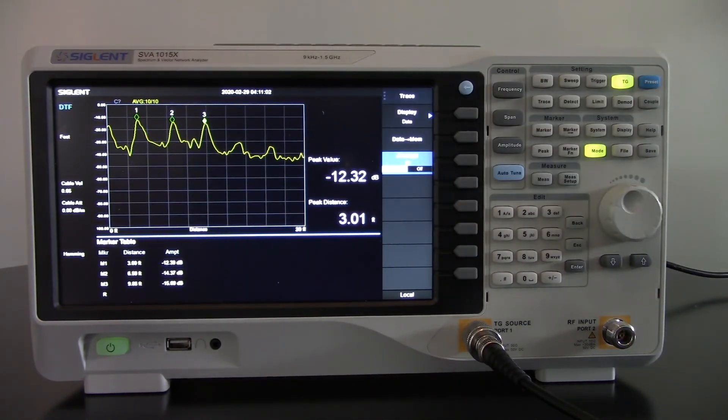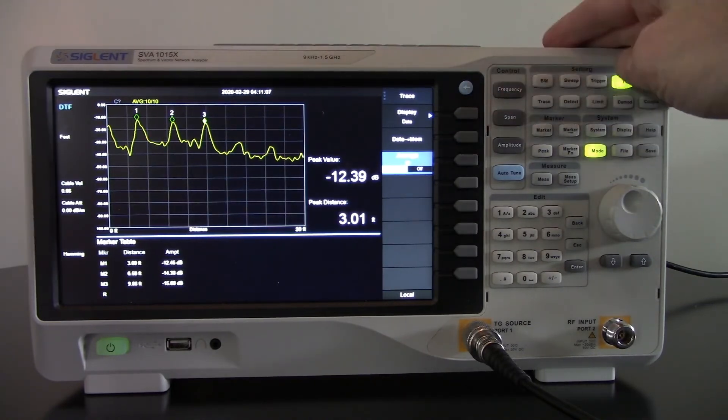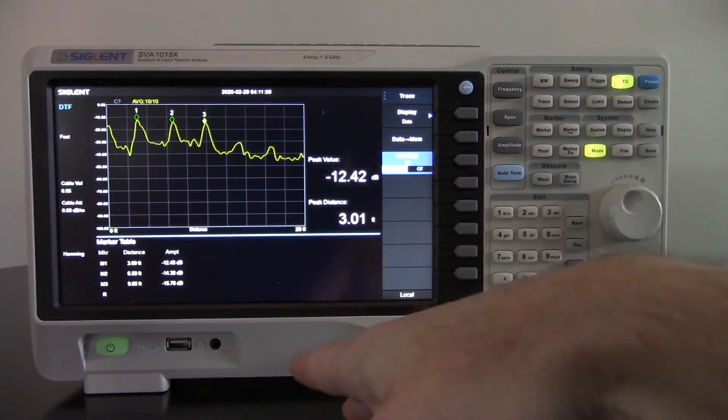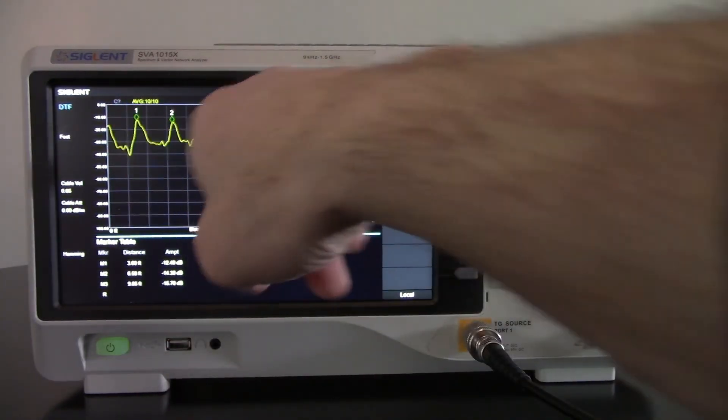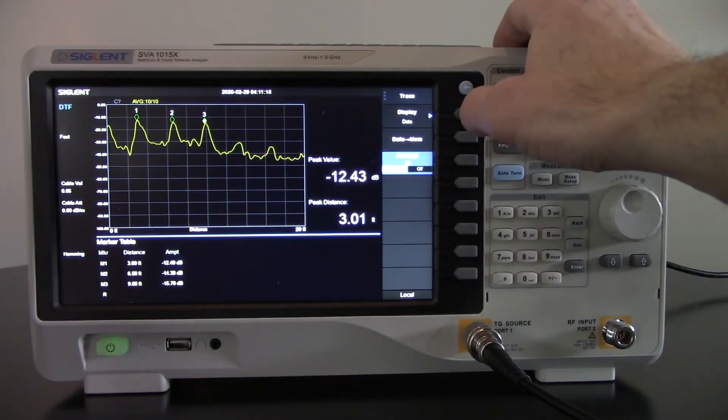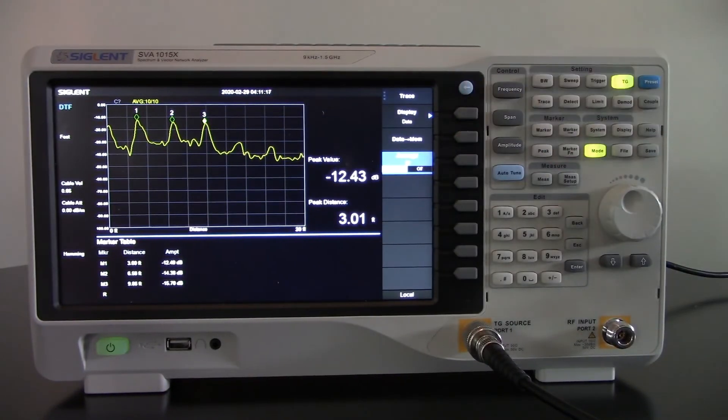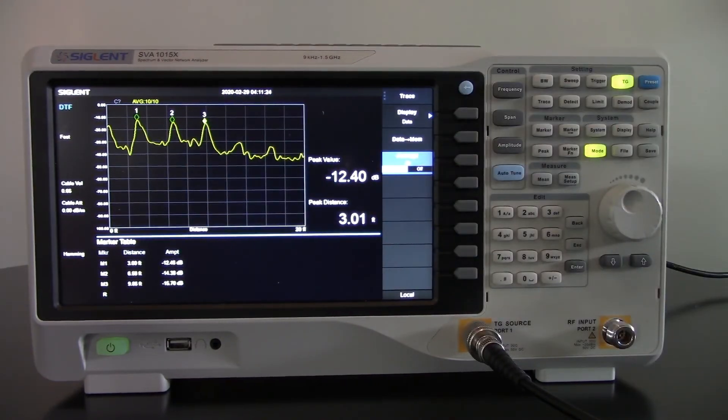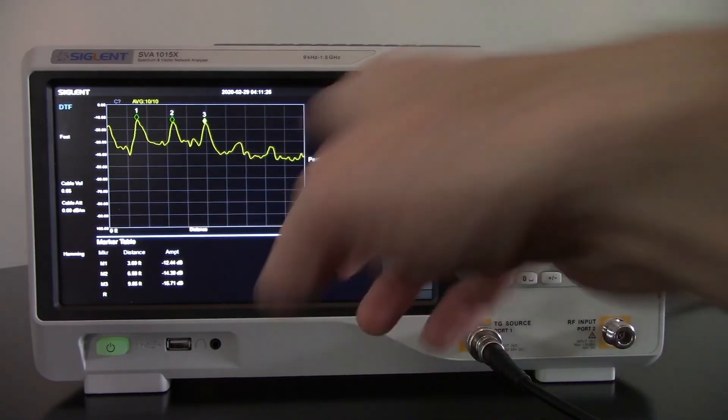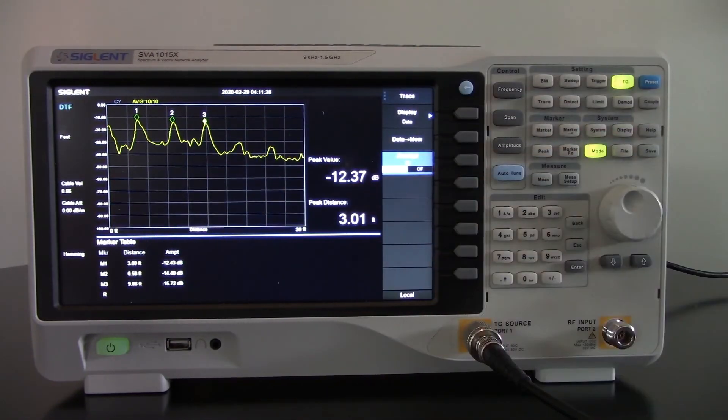So using the distance to fault feature, very simple, we can see each one of those connection points and we could actually take a picture of this if we wanted to. We could insert a USB stick and save this picture exactly as it stands, or we could save it to memory and compare it later. So as the connections may degrade over time, we can compare that to this new, or we can compare the new picture to this existing picture.